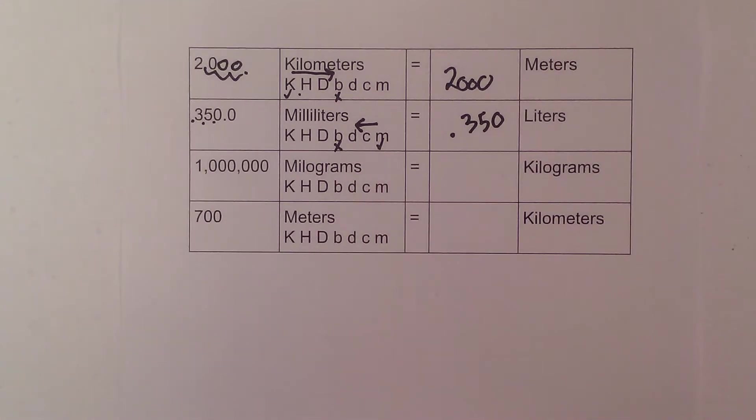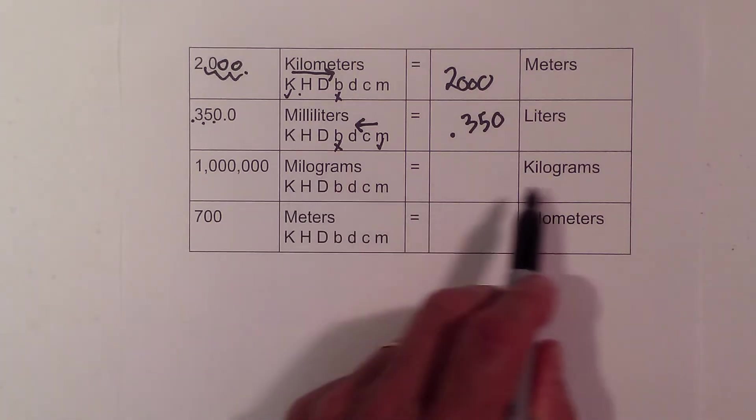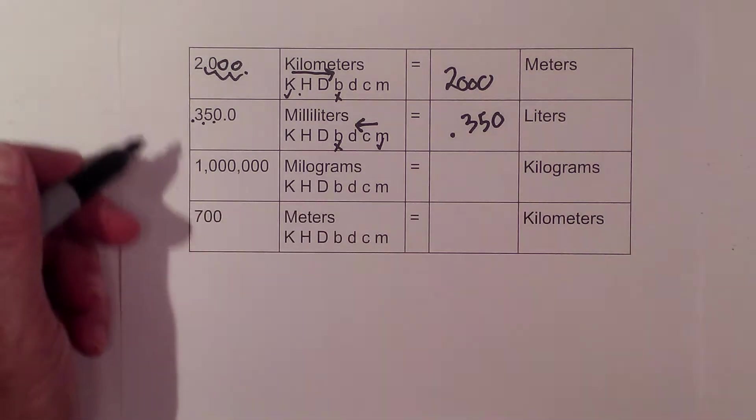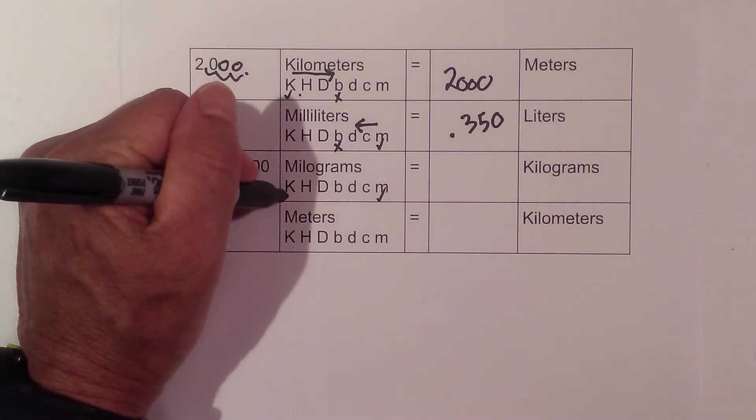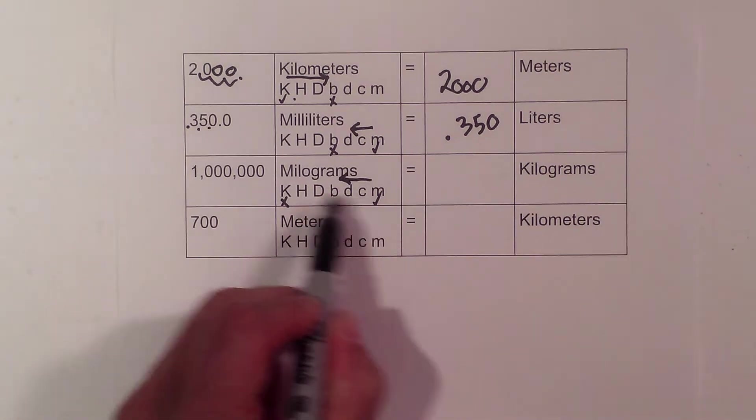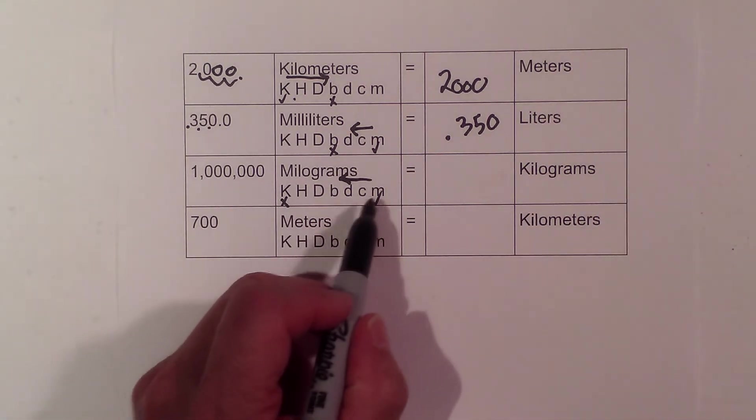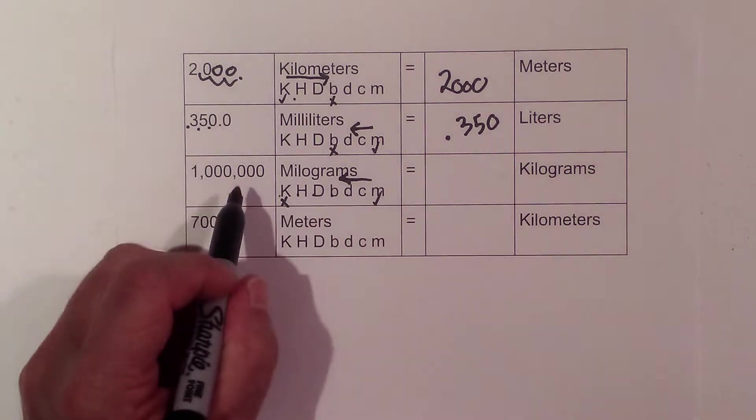Next we have what looks like a million milligrams equals how many kilograms. Well, let's just convert it. We're going to start—check is where we begin. We're going to kilograms all the way over here. We're going from check to the X. I count one, two, three, four, five, six, so I just move one, two, three, four, five, six. Looks like 1 kilogram.